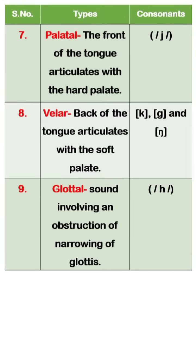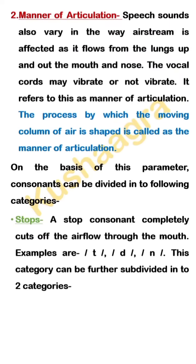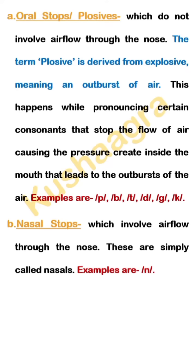On the basis of manner of articulation, consonants can be divided into the following categories. First is stops. This is of two types: oral stops, which are called plosives, and nasal stops, which are simply called nasals.